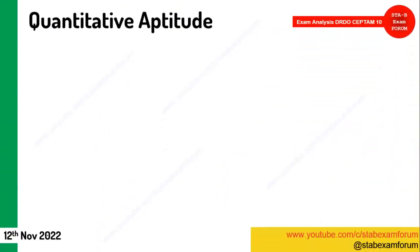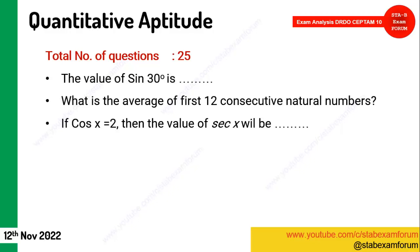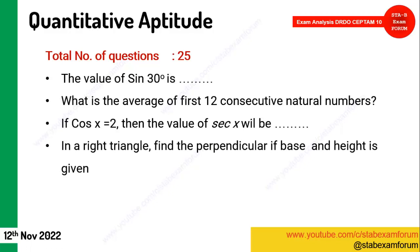Moving to Quantitative Aptitude — 25 questions. From trigonometry, the value of expressions like sin 30° was asked. A question on the average of first consecutive natural numbers appeared. From trigonometry, some value-based conversions were asked. A question related to Pythagoras theorem appeared — finding the perpendicular if the base or height is given.